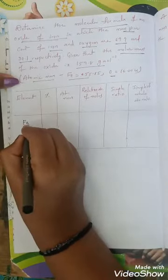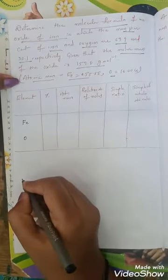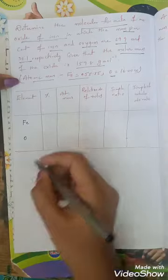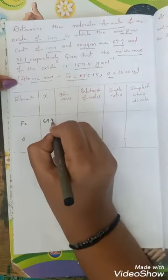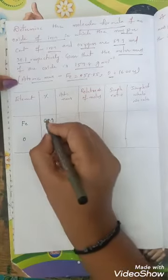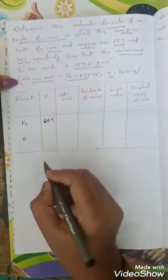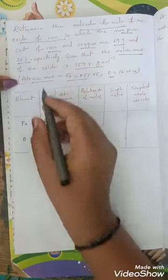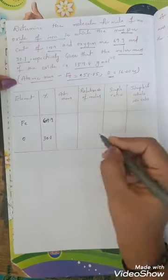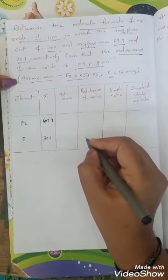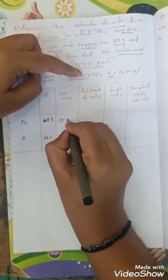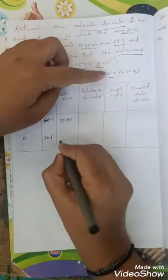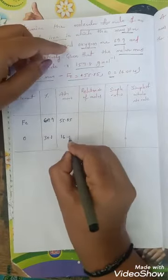First write down the elements given. So what are the two elements? Iron and oxygen. Percentage of iron — the mass percentage is 69.9. And oxygen mass percentage is 30.1. Now write atomic masses. What is atomic mass of iron? That is 55.85. Oxygen is 16.0.